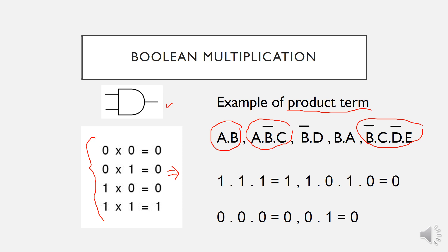A product term is equal to one when all variables in the term are one. If all the variables equal one, then the product terms will become one. If any of the variable in the product term is equal to zero, the product terms will become zero.